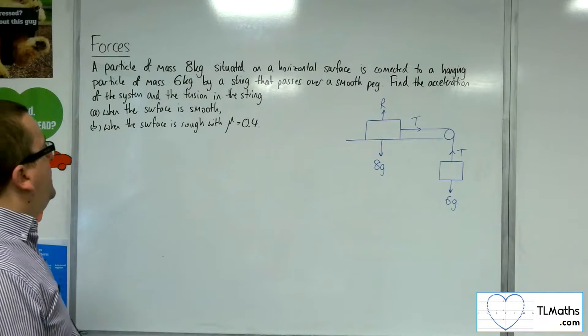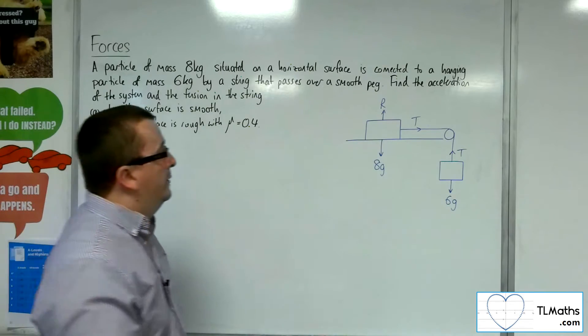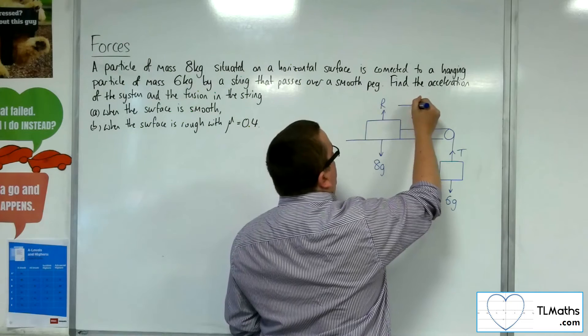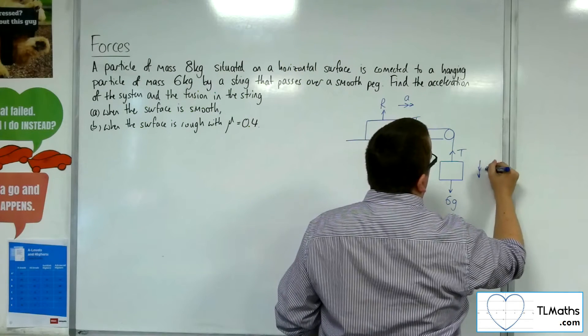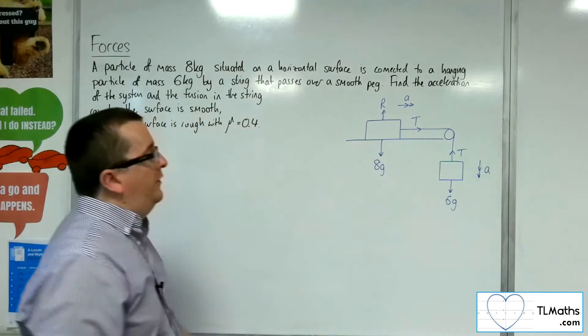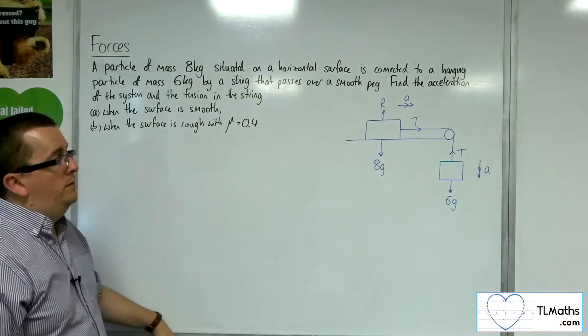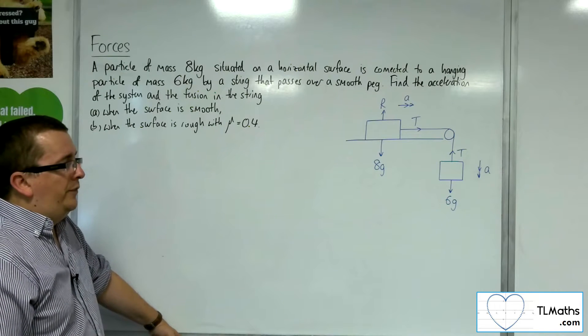We first of all need to find the acceleration and the tension in the string when the surface is smooth. So if the surface is smooth, then the blocks will be accelerating to the right, and this particle accelerating downwards. That will be the direction of motion, of any possible motion. So let's see what happens then.